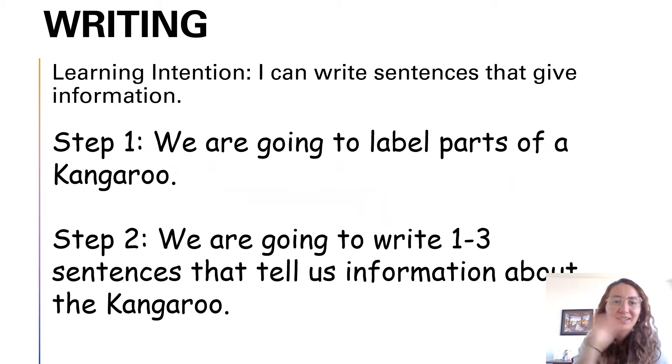We're starting in writing today. Our learning intention for this week is I can write sentences that give information. Because we are writing informative texts, we're writing things that do not give our opinion. Today we are going to do these two steps. Step one, we are going to label parts of a kangaroo. Step two, we are going to write one to three sentences that tell us information about the kangaroo. You might want to even do your own research and add more, but it's up to you. So let's get started.